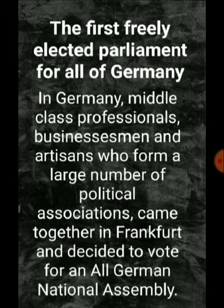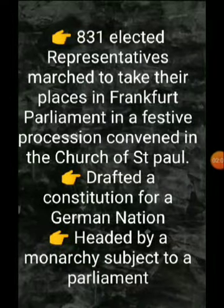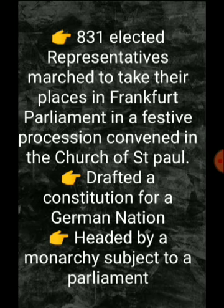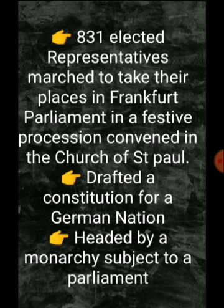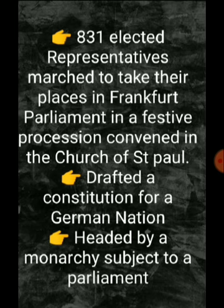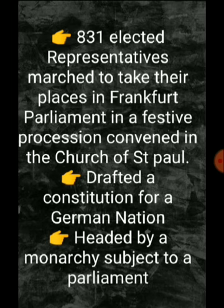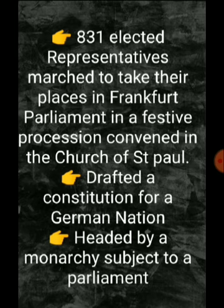They elected 831 members as representatives and gave them places in Frankfurt. These elected members then marched to take their places in the Frankfurt Parliament in a festive procession, convening in the Church of St. Paul.